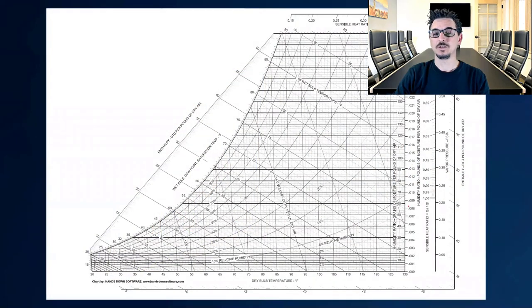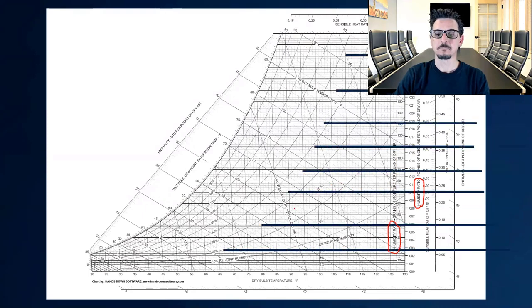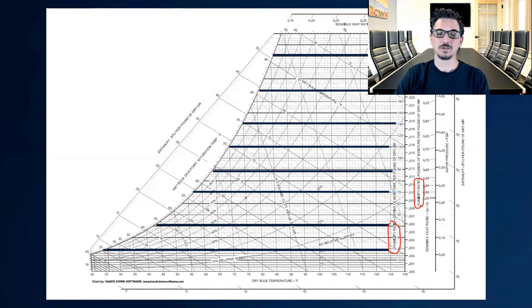Humidity ratio on the chart is expressed here. Pounds of moisture per pound of dry air, or here, which is grains of moisture per pound of dry air, which is what we just looked at. The lines run horizontally this time. So let's say you were here at 70 grains or 0.010 pounds per pound of dry air.